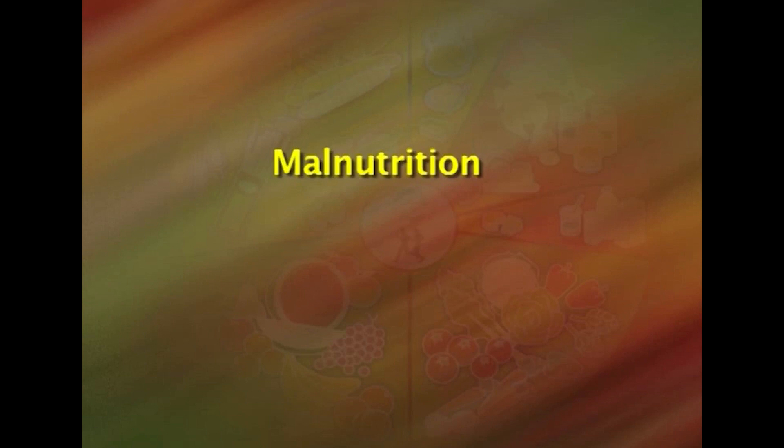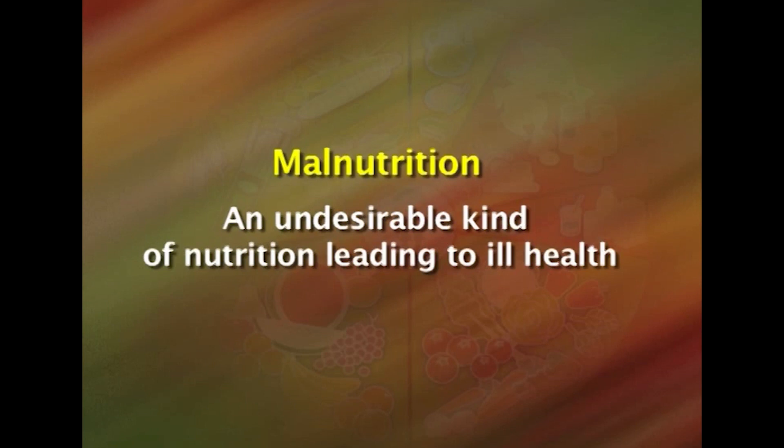Poor nutritional status may also result from poor and irregular food eating habits, bad food selection, and irregularity in the schedules of meal, work, sleep, and elimination. Coming to malnutrition: malnutrition means an undesirable kind of nutrition leading to poor and ill health. It includes both undernutrition — an insufficient supply of essential nutrients — and overnutrition, which refers to excessive intake of one or more nutrients that creates stress on bodily function.